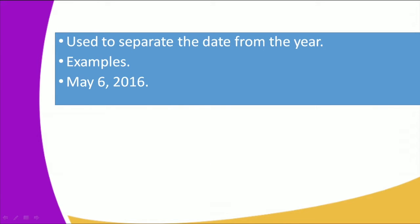The next use of the comma is that it's used to separate the date from the year. Example: May 6, 2016. So the comma comes after the date and then the year follows.